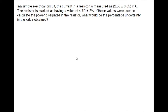The fifth example: in a simple electrical circuit, the current is 2.5 ± 0.05 mA and the resistor is marked as 4.7 Ω ± 2%. One value is in fractional form and the other in percentage form, so we must convert both to the same form before calculating.